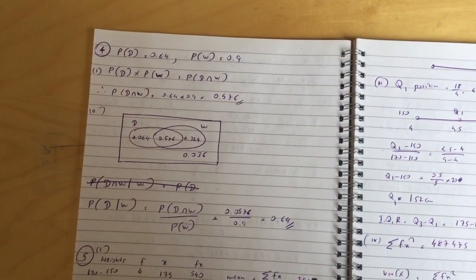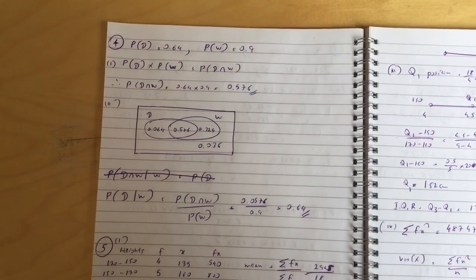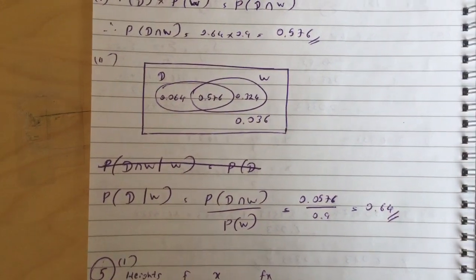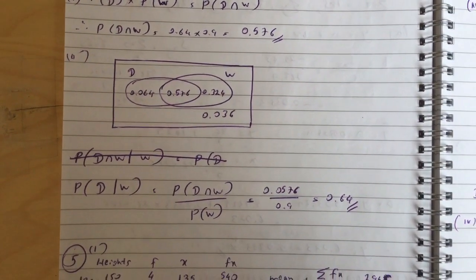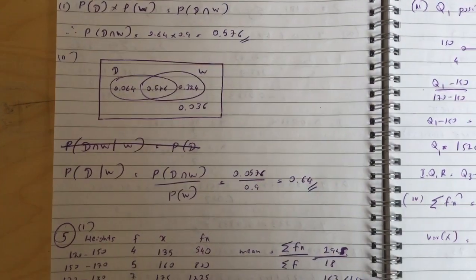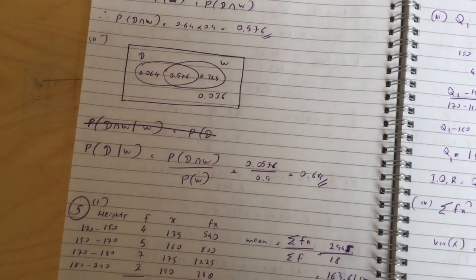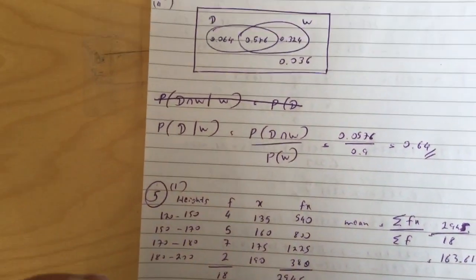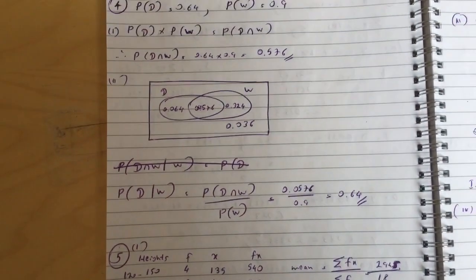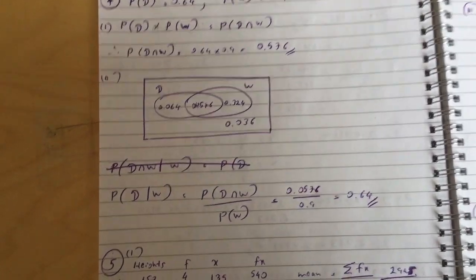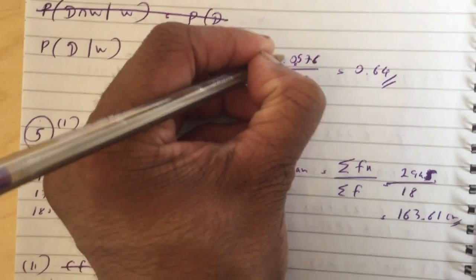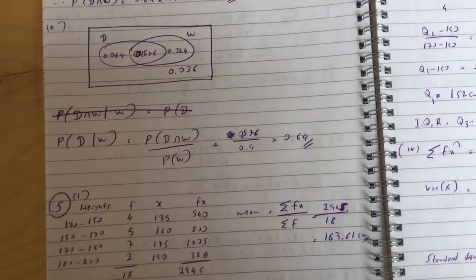Question 4 is a probability question. Since D and W are independent, probability of D times probability of W equals probability of D and W, which works out to be 0.0576. I completed the Venn diagram. Probability of D given W is 0.0576 over 0.9 — note it should be 0.576 in one place — but the answer is correct.